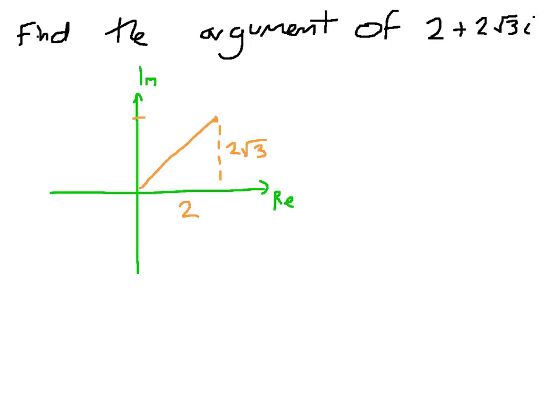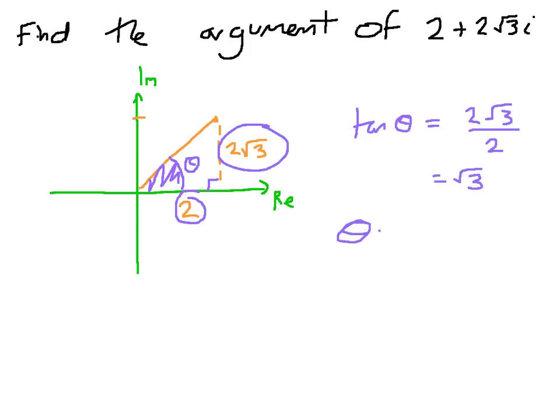What's the argument of a complex number? It's the angle it makes with the real axis. So I'm looking for that angle there. This is a straightforward right-angled triangle, and you have the opposite and the adjacent side. So you should know that the tangent of theta equals the opposite over the adjacent. And yes, I did choose these numbers on purpose, so that's root 3. So theta equals the arc tangent of root 3.